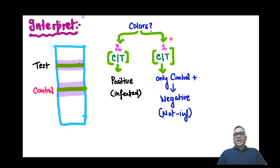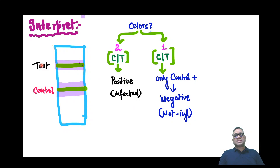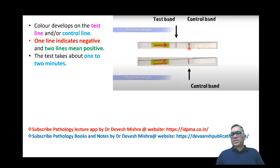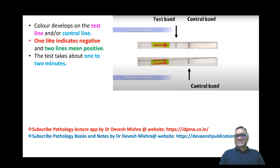If you are seeing only one color where control is positive and the test is negative, that should be considered a negative test, meaning that person is not infected with COVID-19. As you can see, this is the control band and this is the test band. Both positive means the patient is infected; only the control band stained means the test is negative and the patient is not affected. One line is negative, two lines means the sample is positive.